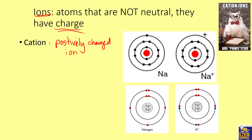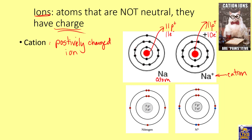Let's look at what happens to form a cation. Sodium has 11 protons and 11 electrons, so it's a neutral atom. But if it loses one electron, it now has 11 protons and only 10 electrons — one more proton than electrons — so it becomes a positively charged ion, called a cation. Cations form by losing electrons.